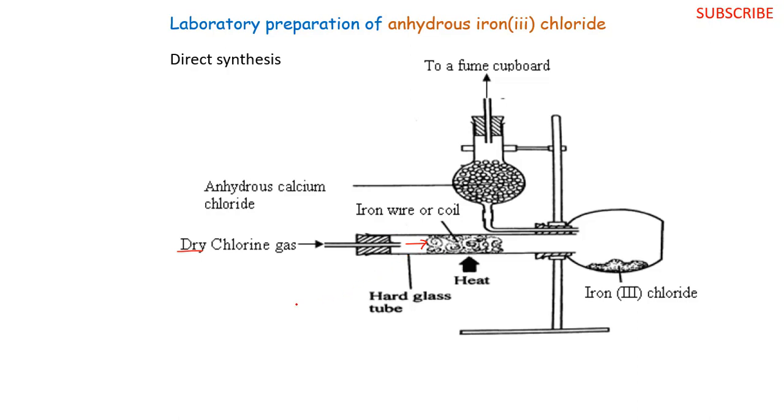Our dry chlorine will come and then it will be reacting with our iron wire. But before we do that, we must first ensure that we make our setup free from air. Before we start heating our iron wire, we shall pass some chlorine gas through our setup, such that we drive out all the present air so that our iron does not react with any oxygen or any other gas that might be present.